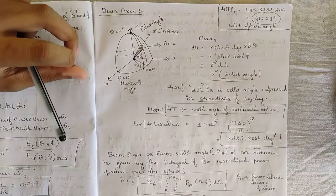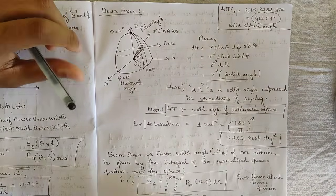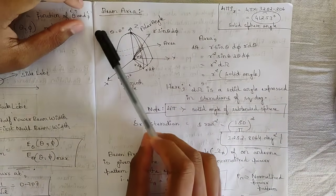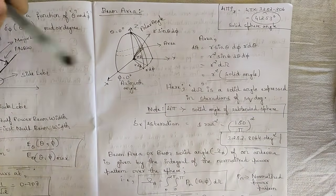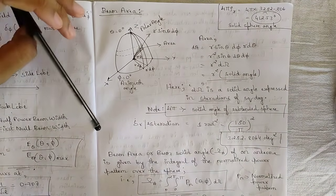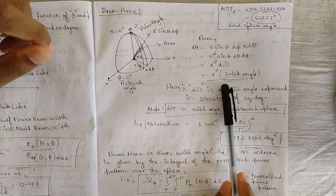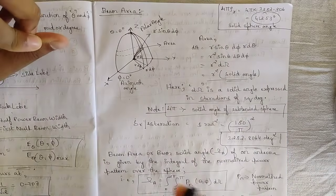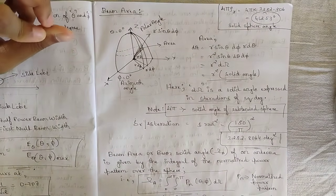With respect to the field pattern we have some more parameters. The first one we are going to discuss in this video is called beam area and directivity. We are going to be discussing beam area and directivity in this video. Stay tuned, watch till the end, and whatever expressions I have written here, please write them down. I'm also going to be circulating these notes in the video description, so go and access them.